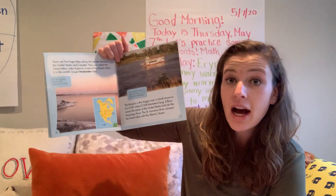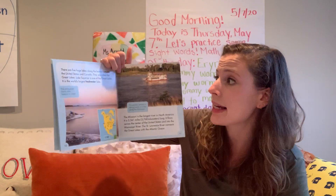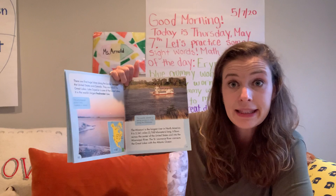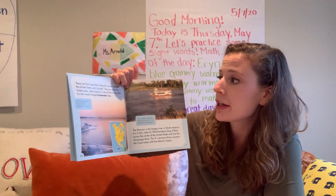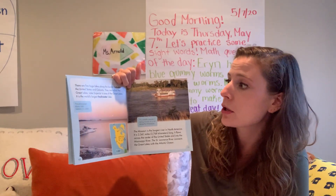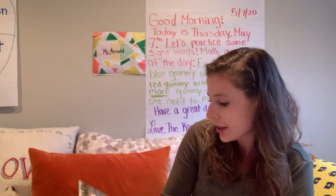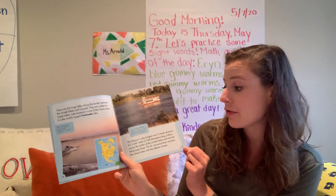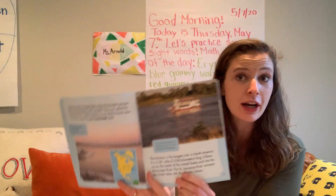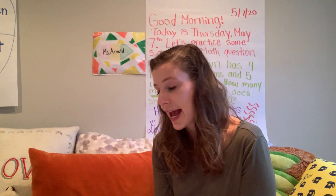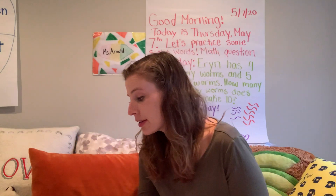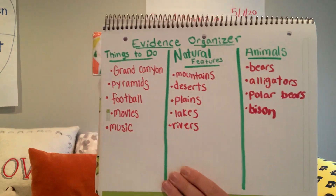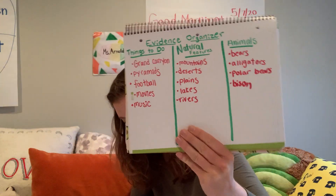There are five huge lakes along the border between the United States and Canada. They are called the Great Lakes. Lake Superior is one of the Great Lakes — it's the world's largest freshwater lake. And then on this page, we learn about the Missouri River and how that's the longest river in North America. So I'm going to add lakes and rivers to my organizer underneath natural features.